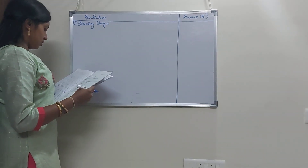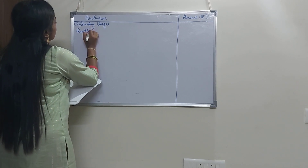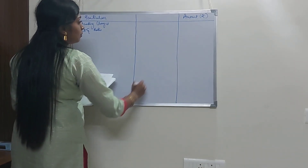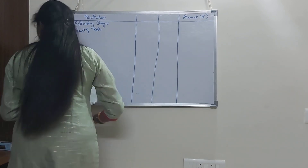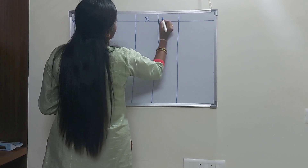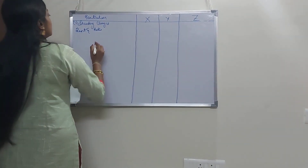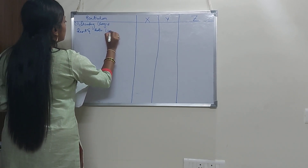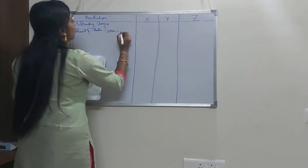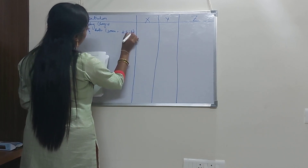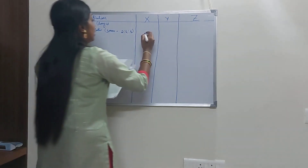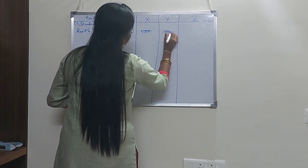Rent and rates — the total value is 30,000 and it would be apportioned on the basis of area occupied, so the ratio is 2:4:6. If you apportion 30,000 in the ratio of 2:4:6, it would be 5,000, 10,000 and 15,000.